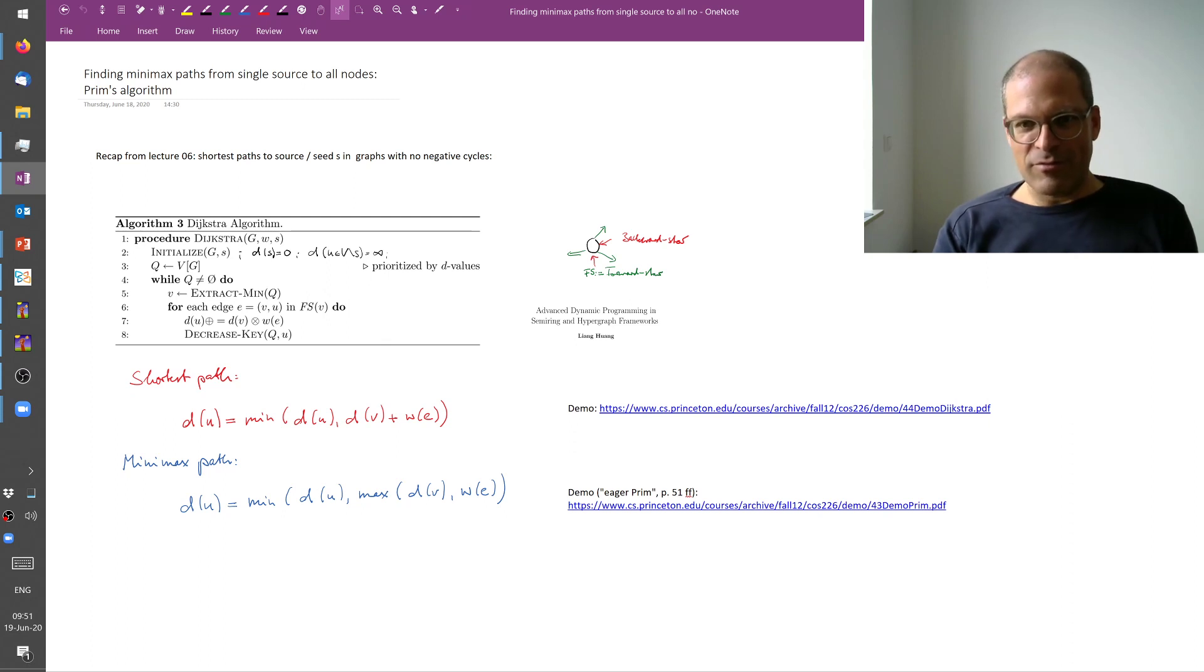And you see that we continue until we have a tree, a spanning tree, and you see that this algorithm is essentially identical to the shortest path algorithm except for this tiny detail here. Up there we considered the sum of the best previous cost and the new edge weight and here we only consider the bigger of the two. Was it more expensive to get here or is the next edge the single most expensive one? So the code is identical up to this minute but important detail.